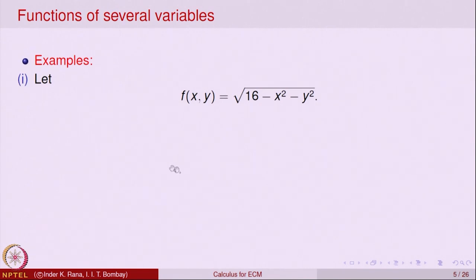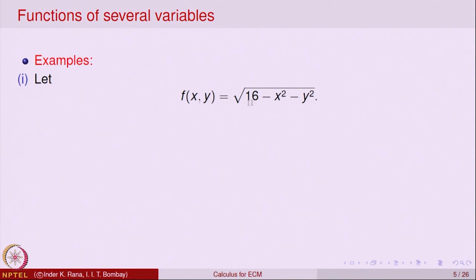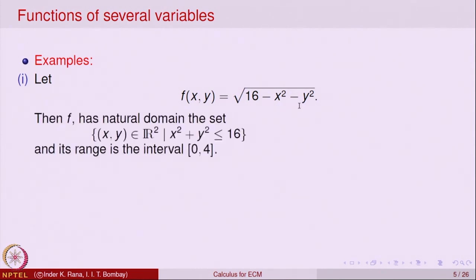Let us look at the function f(x, y) = √(16 − x² − y²), where x and y are real numbers. Because the right-hand side is a square root and we want f(x, y) to be a real number, the expression under the square root must be ≥ 0. So the natural domain is all (x, y) such that 16 − x² − y² ≥ 0, i.e., x² + y² ≤ 16.